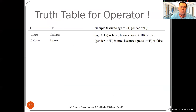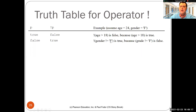Let's see the truth tables for the different operators. For negation (NOT): if a Boolean expression P is true, its negation is false, and vice versa. For example, with age = 24 and gender = 'F': the negation of (age > 18) — since 24 > 18 is true — gives false. The negation of (gender != 'F') — since F != F is false — gives true. It always works as an inverter.